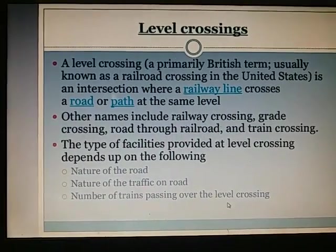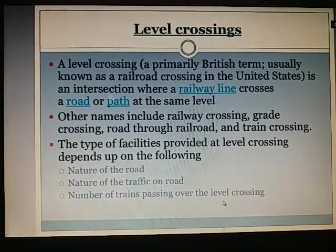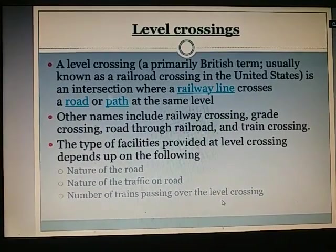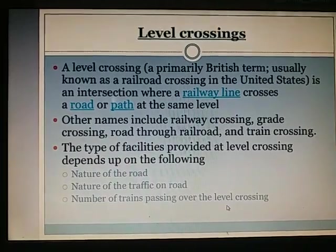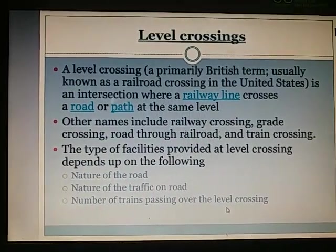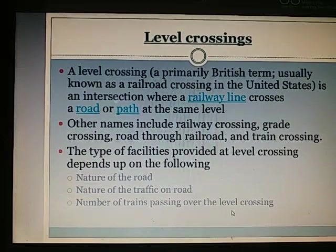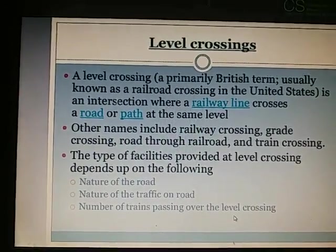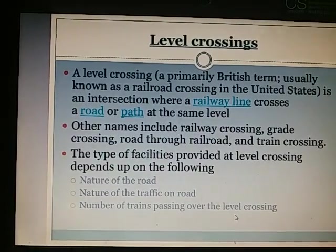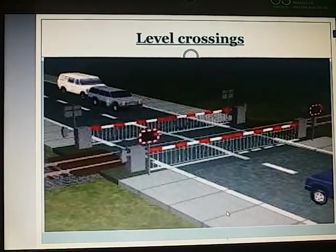Level crossing: A level crossing is basically an intersection where a railway line crosses a road or path at the same level. Other names include railway crossing, grade crossing, road-through-railroad, and train crossing. The type of facilities provided at a level crossing depends upon the nature of the road, how much traffic is on that road, and the number of trains passing over the level crossing.